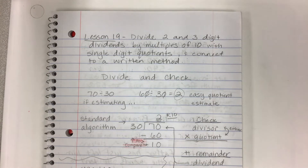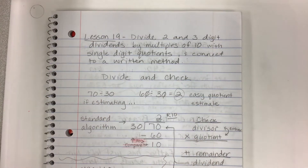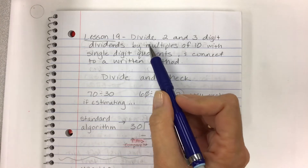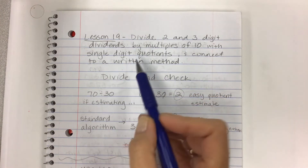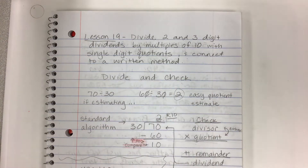This is the exciting part — we are starting Lesson 19. We've been working towards this for days and weeks, and we get to do the standard algorithm in division. This is where we make sense of all the estimating and place value work. The objective is to divide two- and three-digit dividends by multiples of 10, starting with single-digit quotients, and connect to a written method — the standard algorithm.